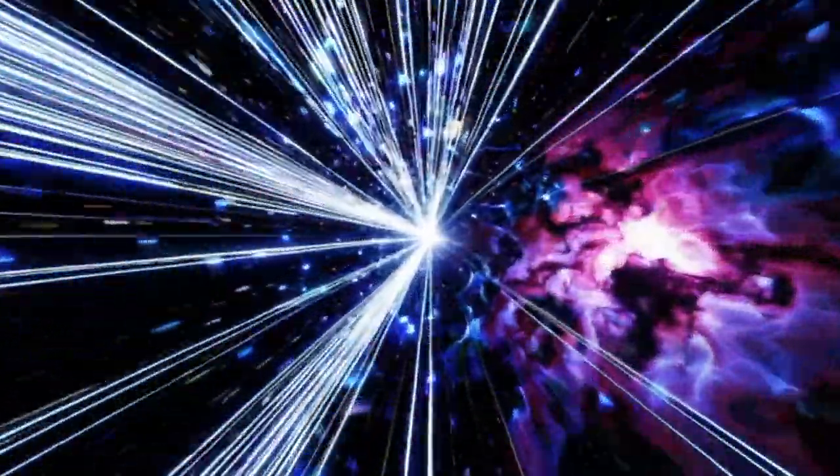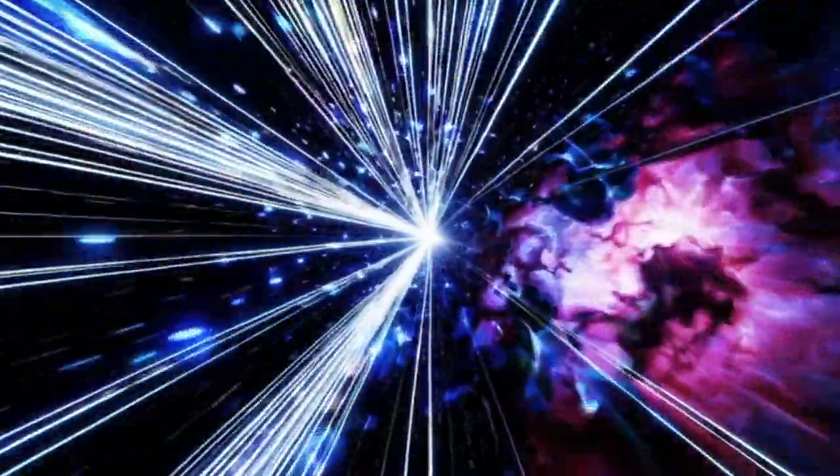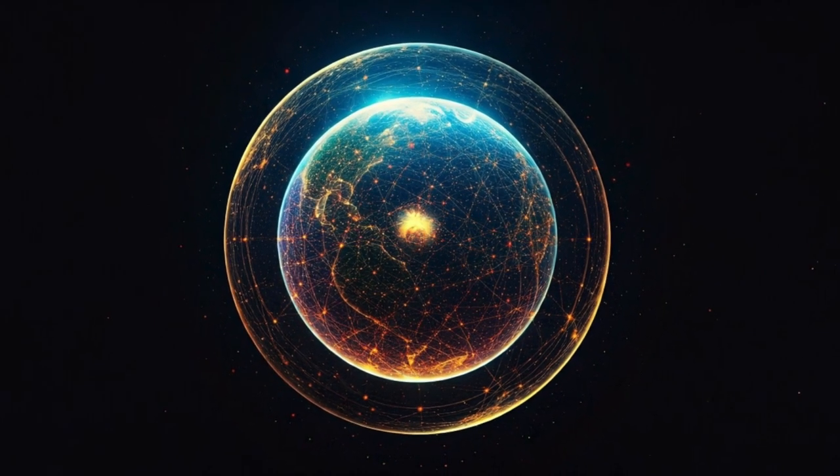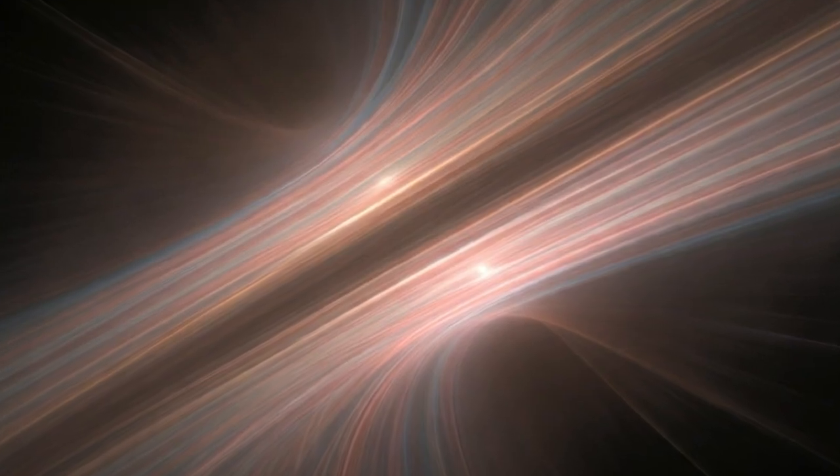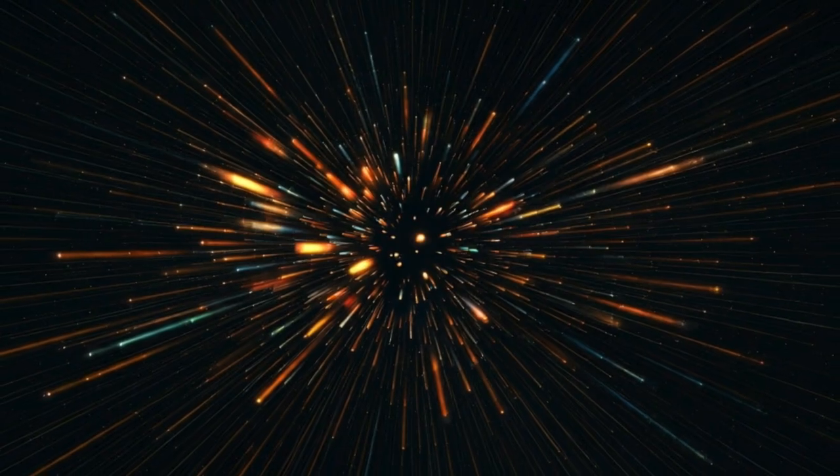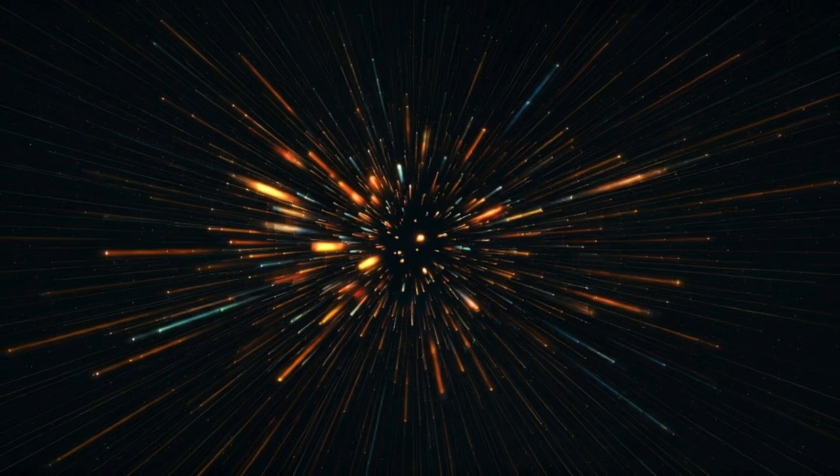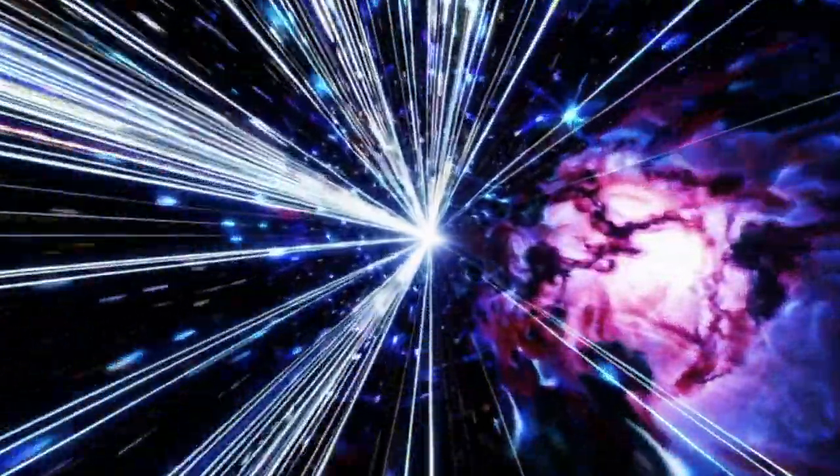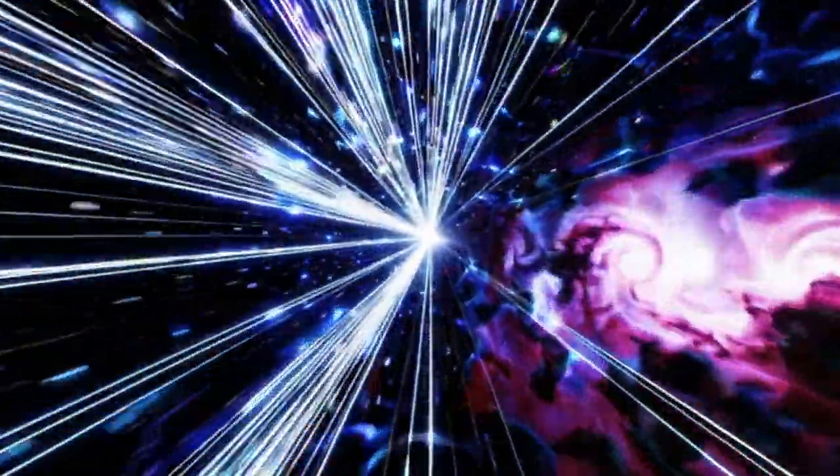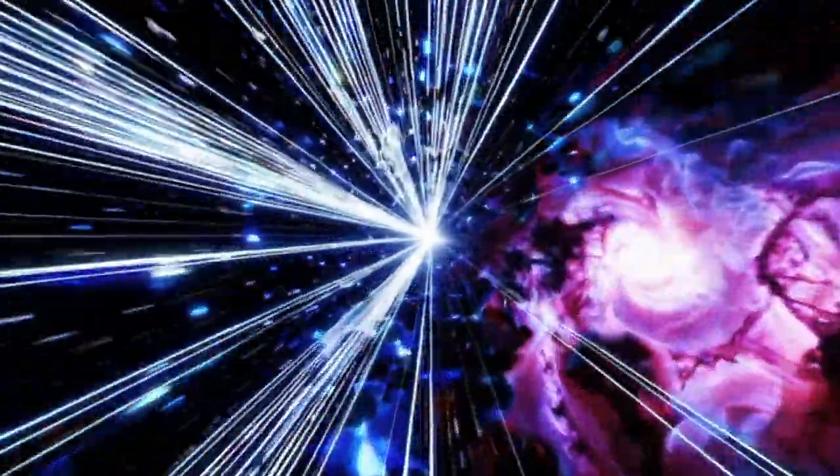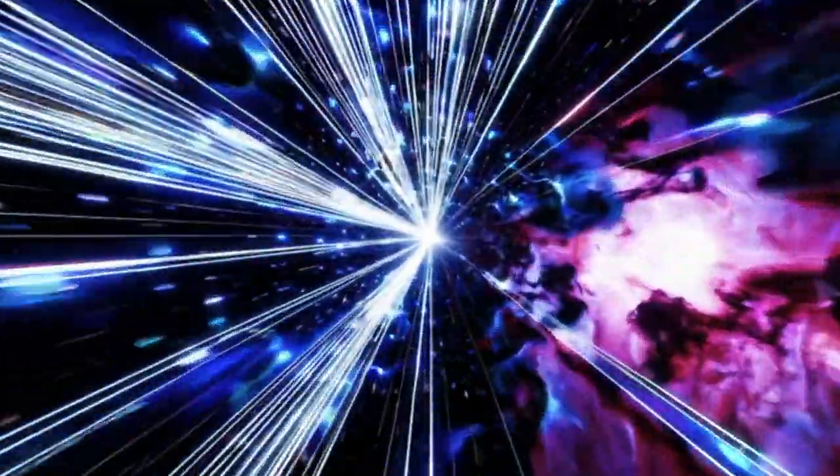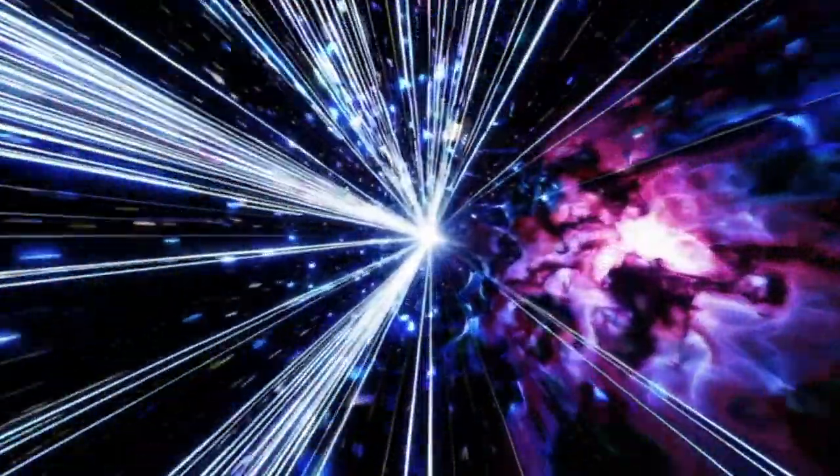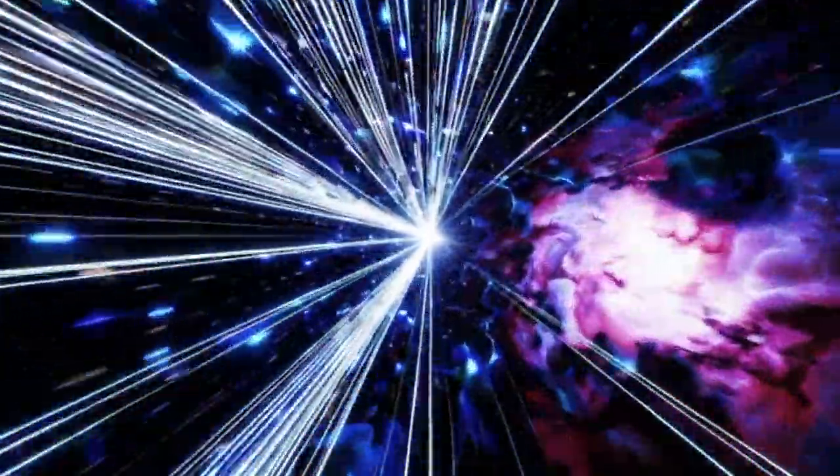But the articles you sent also mentioned something called topological defects. What are those exactly? Imagine the fabric of space-time, but with imperfections woven in. Topological defects are like cosmic threads or even vast walls that stretch across the universe. So like cracks in the very fabric of the universe. In a way, yes. And these might have formed during the universe's earliest moments, back when everything was incredibly hot and dense.